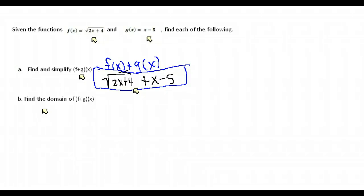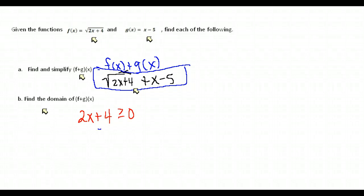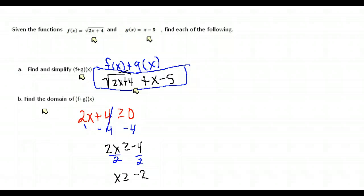Our answer to part a has a square root in it, which causes a problem with the domain, because the domain is all possible x values we can plug in. We cannot plug in anything that will make the number under that radical negative, since you can't take the square root of a negative number and get a real number answer. So we take whatever was under the radical — in this case 2x plus 4 — and set it greater than or equal to 0. Solving: subtract 4 from both sides to get 2x greater than or equal to negative 4, then divide both sides by 2.